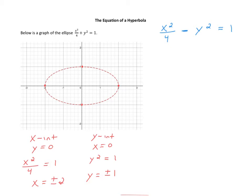For the x-intercepts, you still let y equal 0. When you solve the remaining equation, you still get x squared over 4 is equal to 1, so you actually end up with the same solutions: x is equal to plus or minus 2. By putting a minus here, you still get the same x-intercepts.